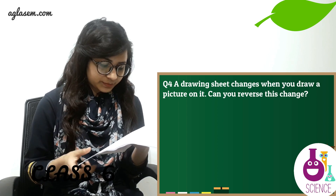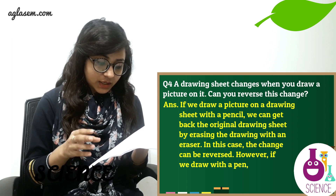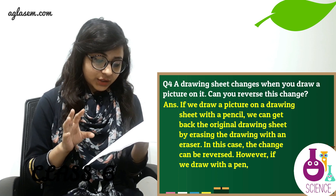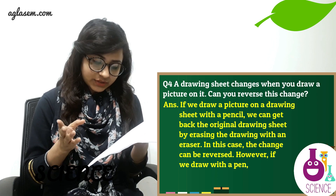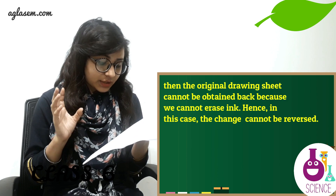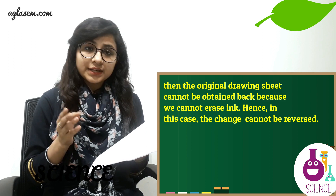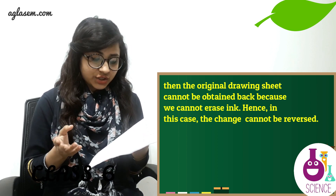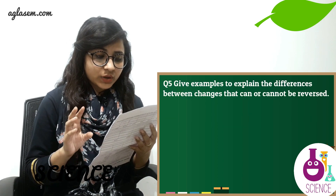Question number four: A drawing sheet changes when you draw a picture on it. Can you reverse this change? The answer is: if we draw a picture on a drawing sheet with a pencil, we can get back the original drawing sheet by erasing the drawing with an eraser — in this case the change can be reversed. However, if we draw with a pen, the original drawing sheet cannot be obtained back because we cannot erase ink, so the change cannot be reversed.